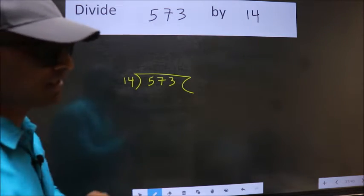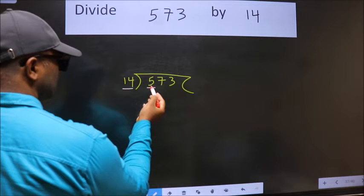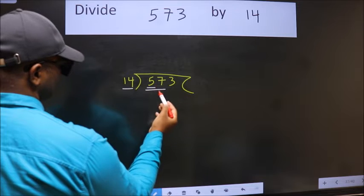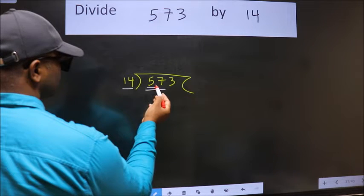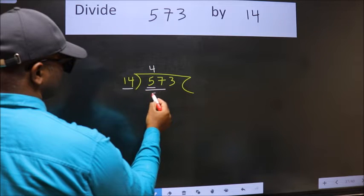Next, here we have 5, here 14. 5 is smaller than 14, so we should take two numbers, 57. A number close to 57 in 14 table is 14 fours, 56.